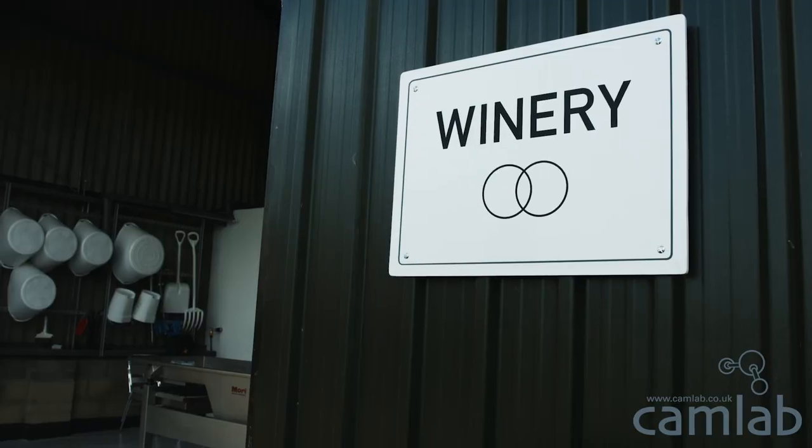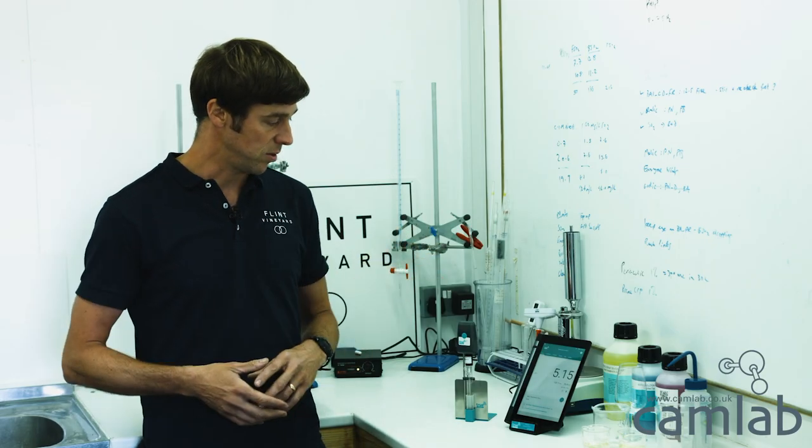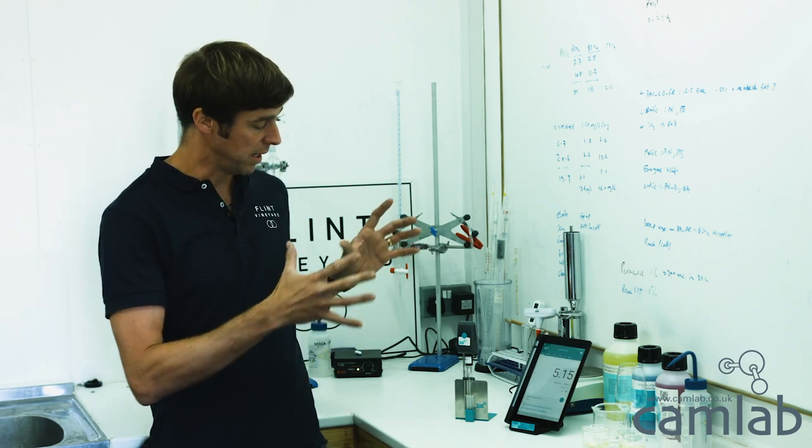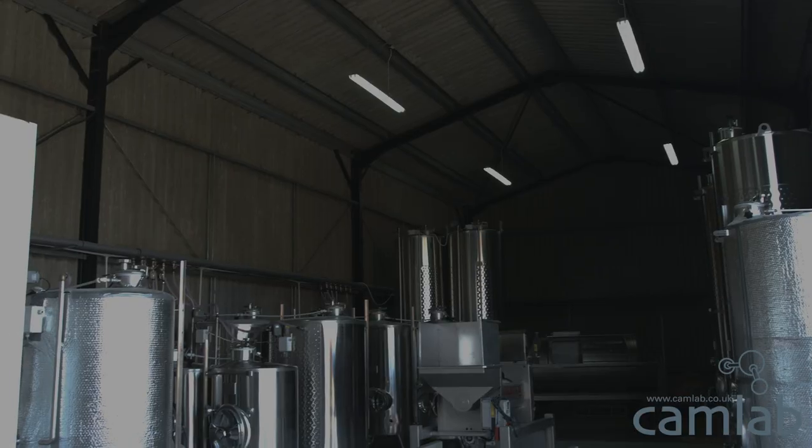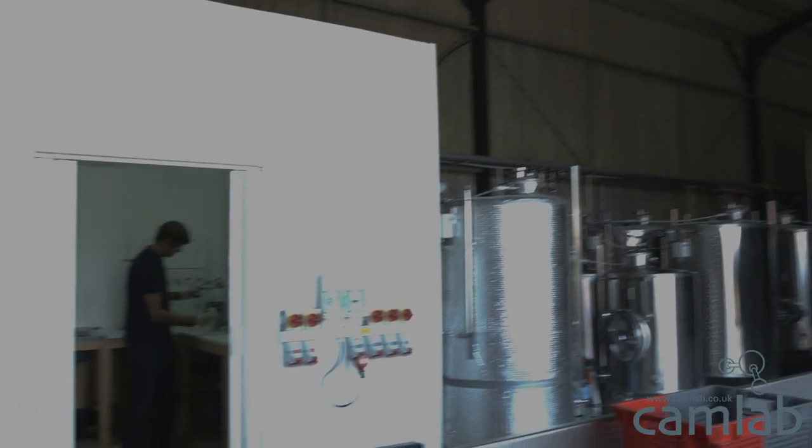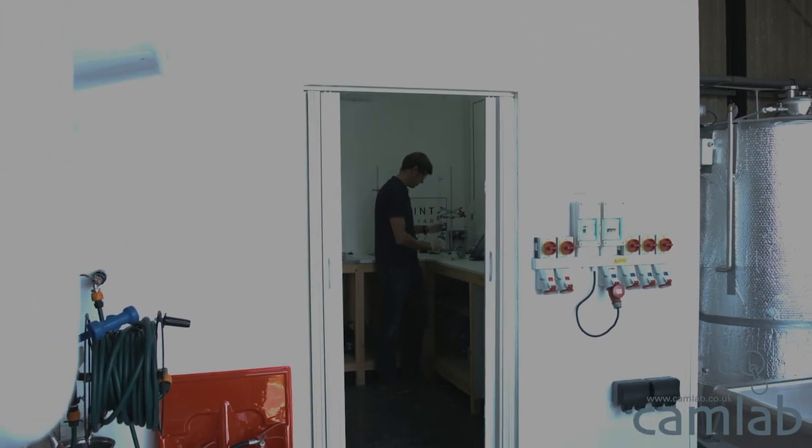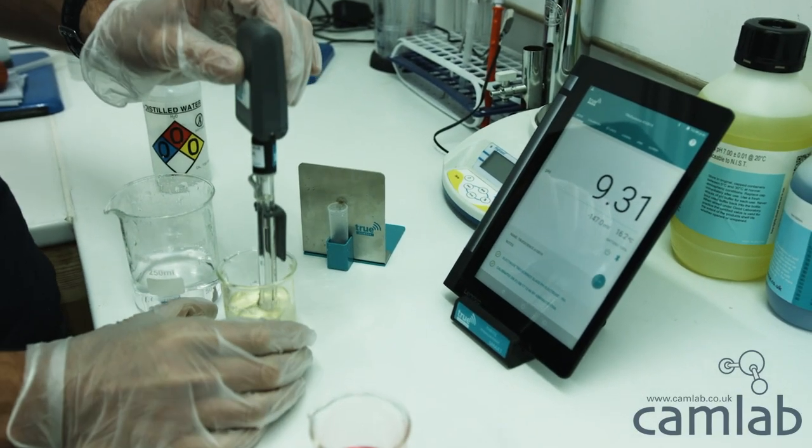The TruScience pH meter is really good for working in a winery because having the Bluetooth connectivity means I can take the pH meter around the lab. If I've got different samples, it's very portable. If necessary, I can take it into the winery.